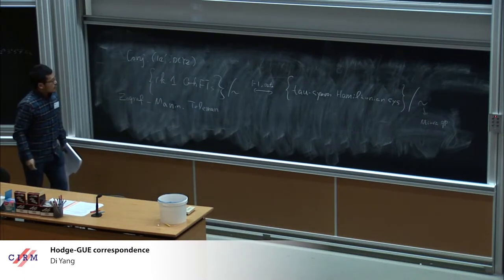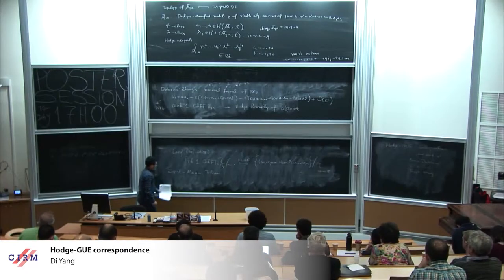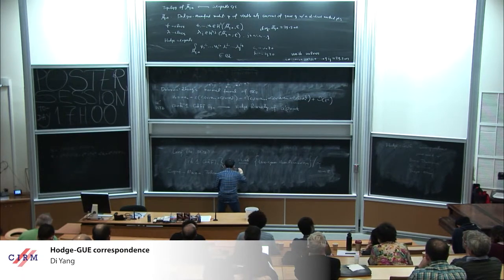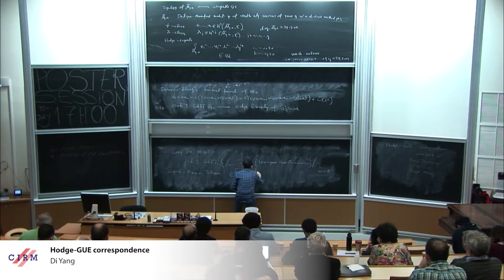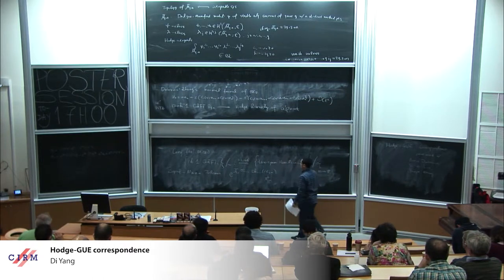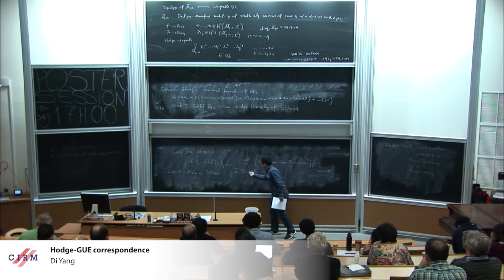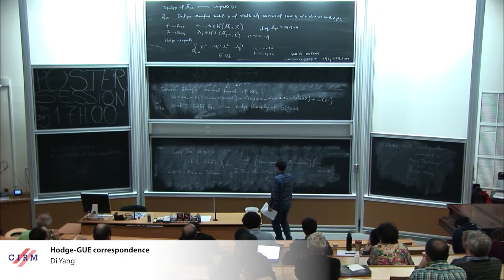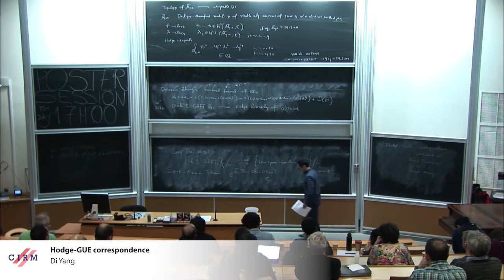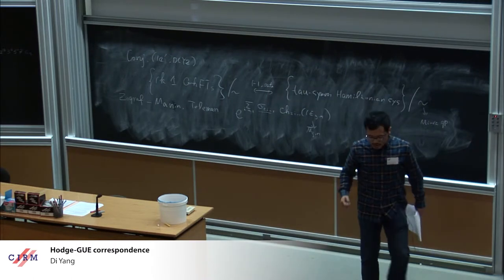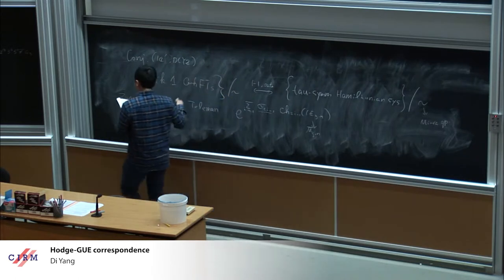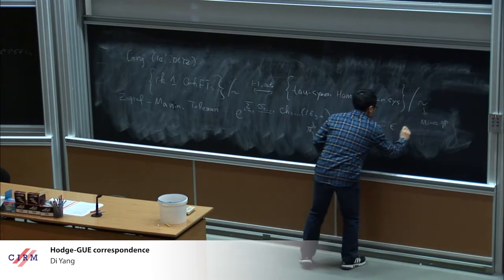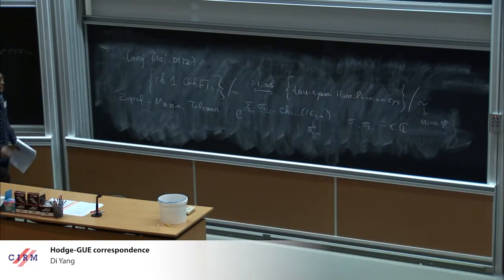This correspondence is explicitly realized. According to Givental and Teleman, the classification of rank-one cohomological field theories is parameterized by the Chern character of the Hodge vector bundle over MgN bar. The complete classification is given by the Chern character with parameters sigma_1, sigma_3, sigma_5, which are arbitrary complex parameters. There is no even part because, according to Mumford's relation, the even component of the Chern character vanishes.